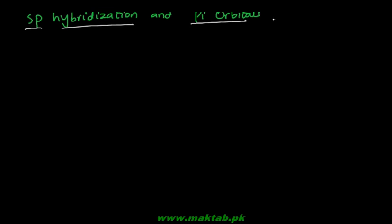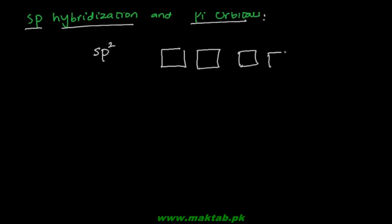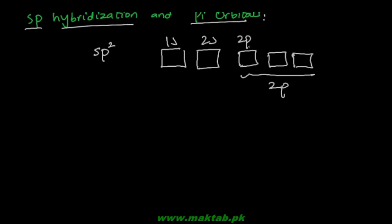SP hybridization and pi orbitals. Last time we talked about SP2 hybridization. In this we said that if you look at the carbon atom and the overall energy levels: 1s2, 2s, and 2p overall — which includes the x, y, and z orbitals.